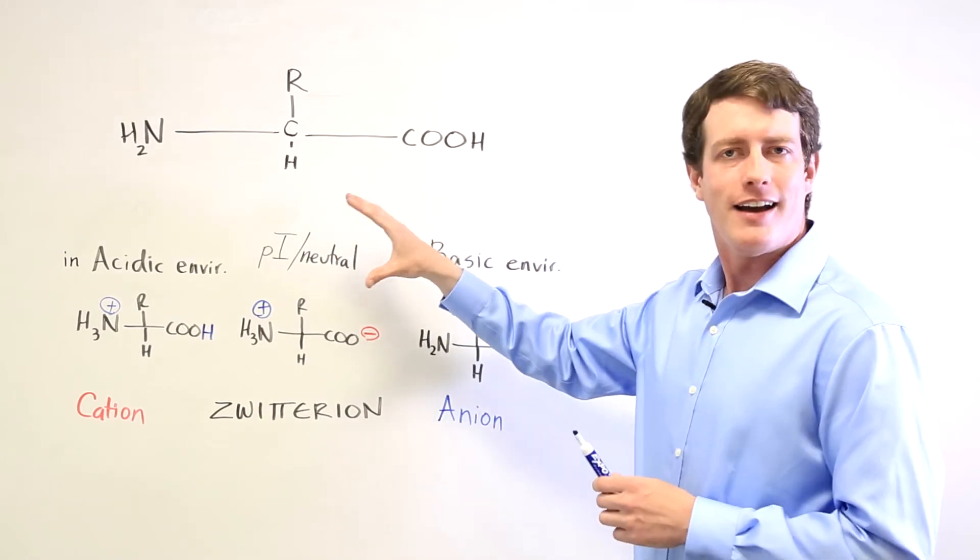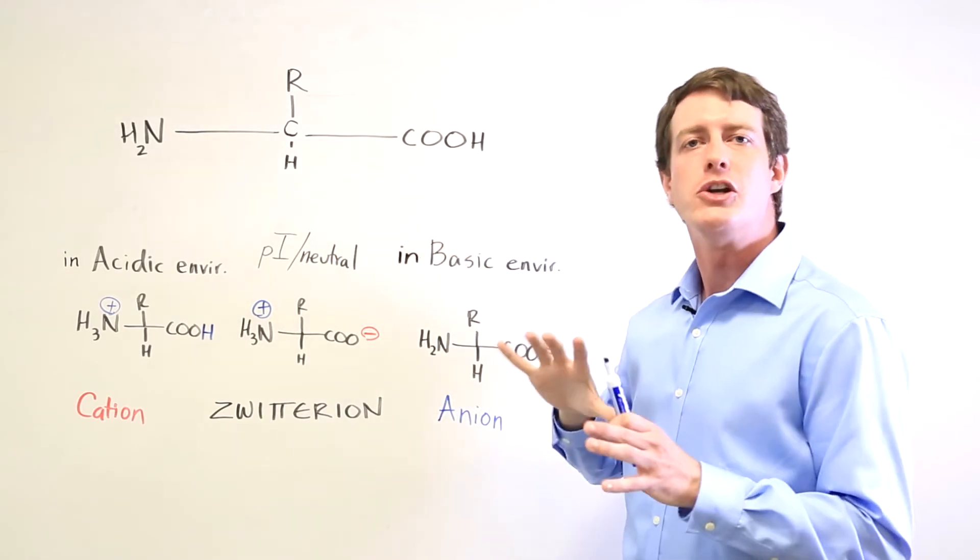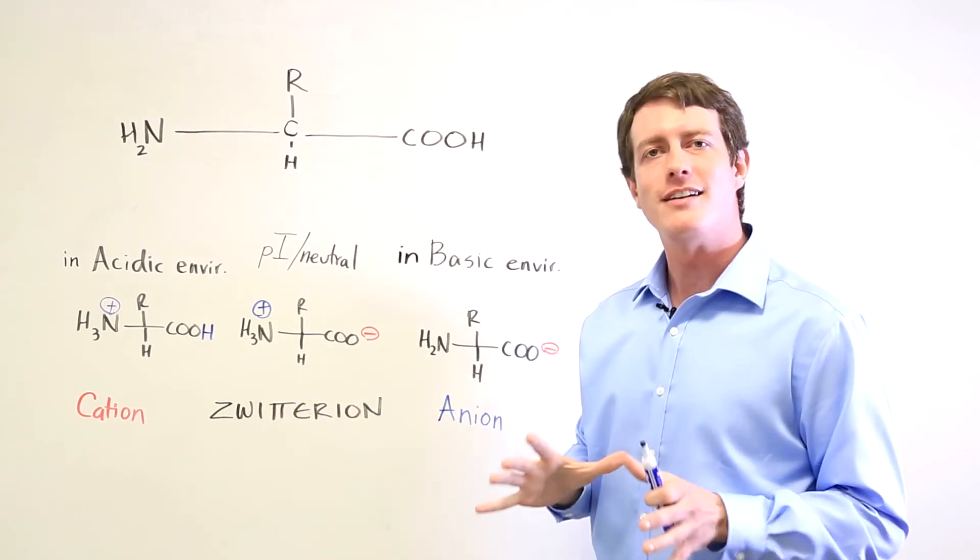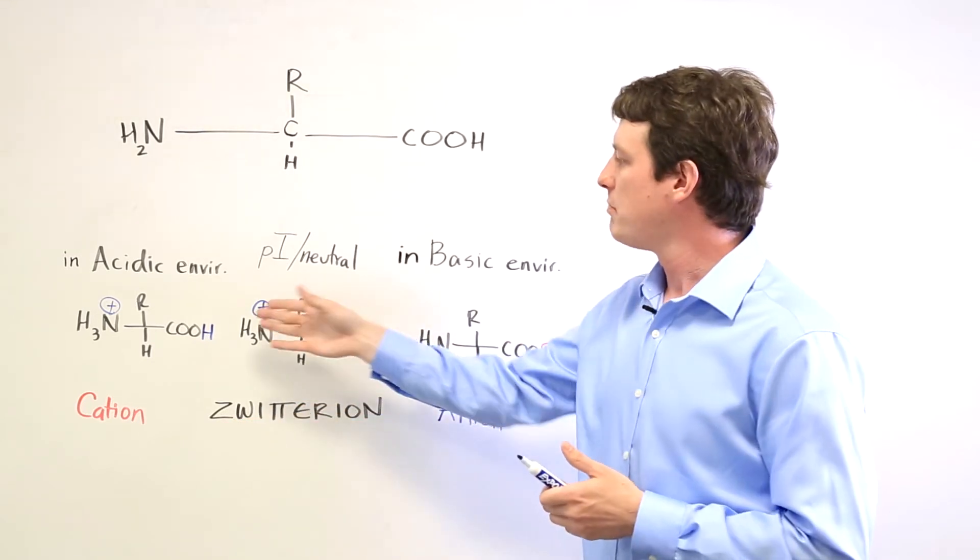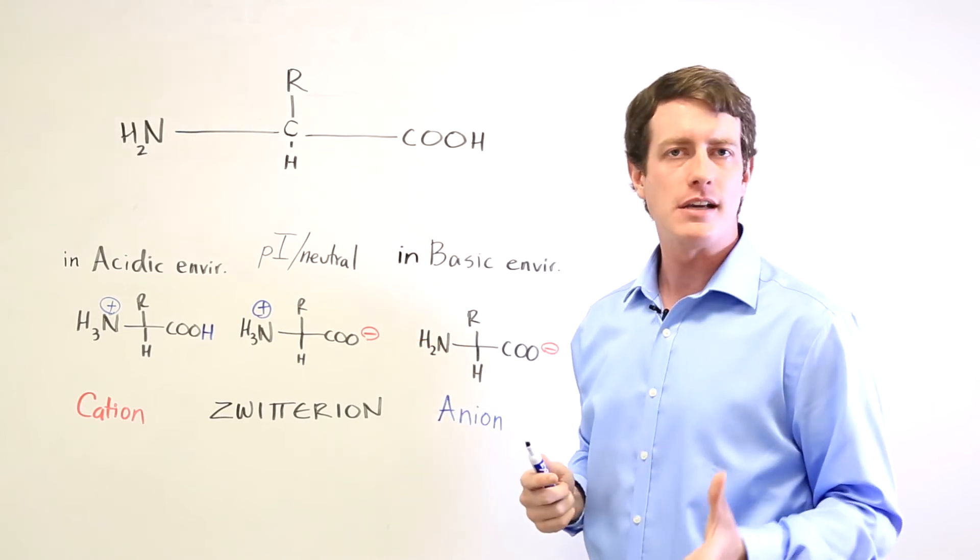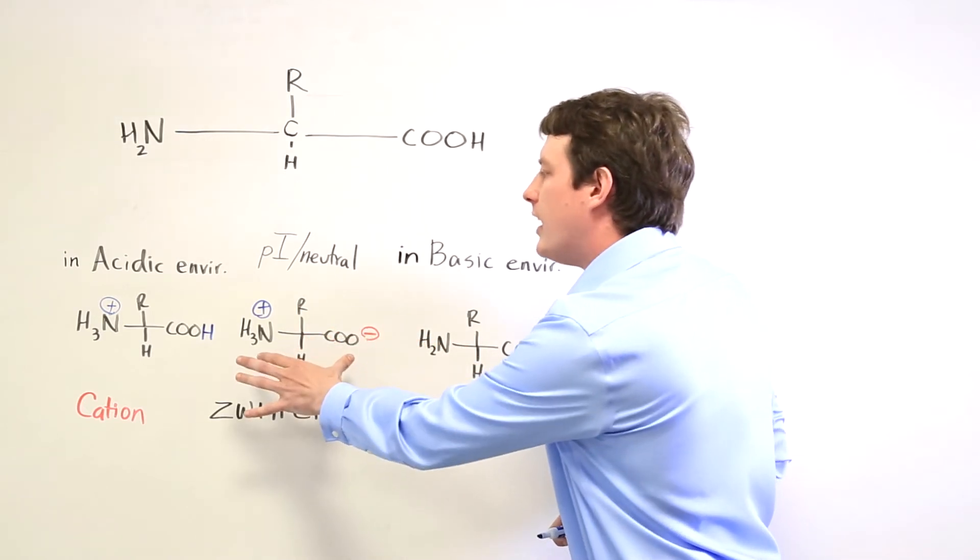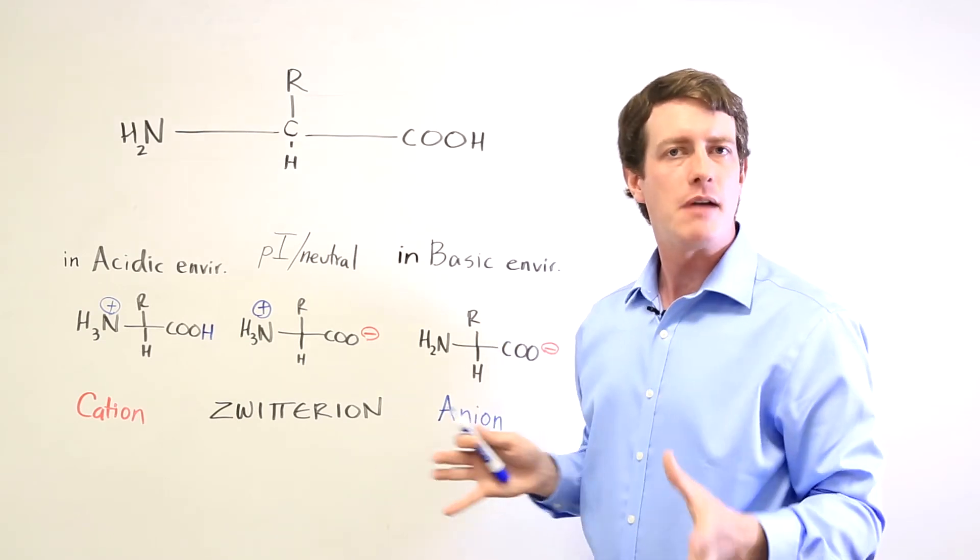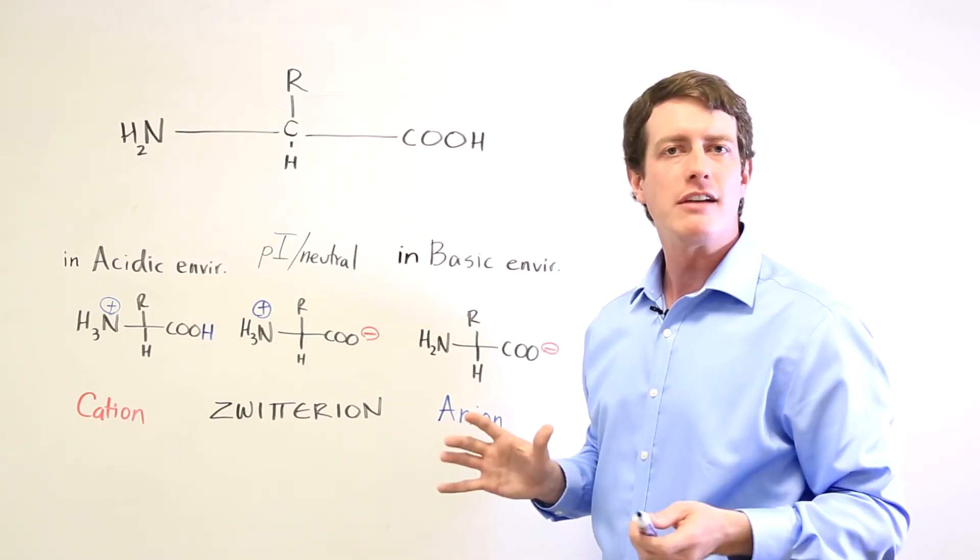At their PI, their isoelectric point or their neutral level, they are a zwitterion. And remember that a zwitterion means that it has both a positive and negative charge on the same molecule. This is a very typical form that we use in order to identify and separate amino acids when we're running various tests.